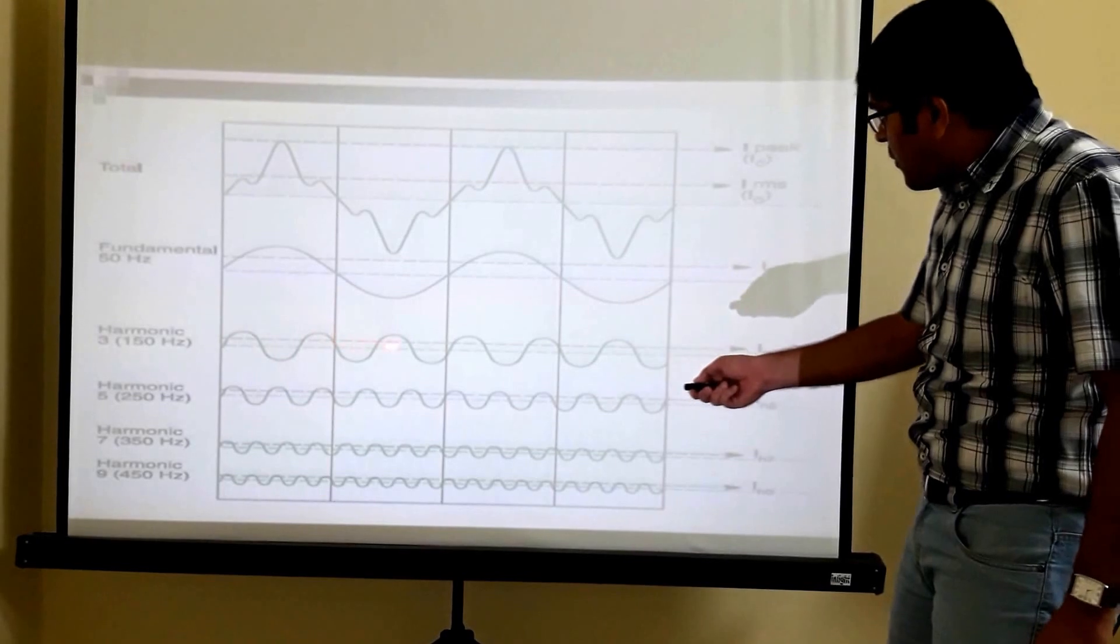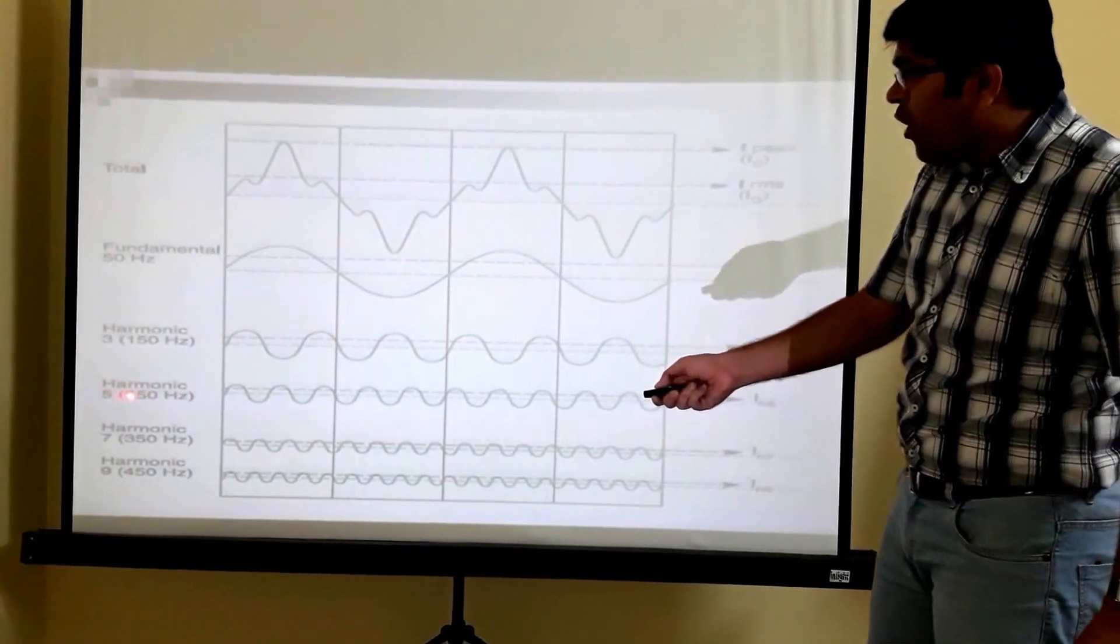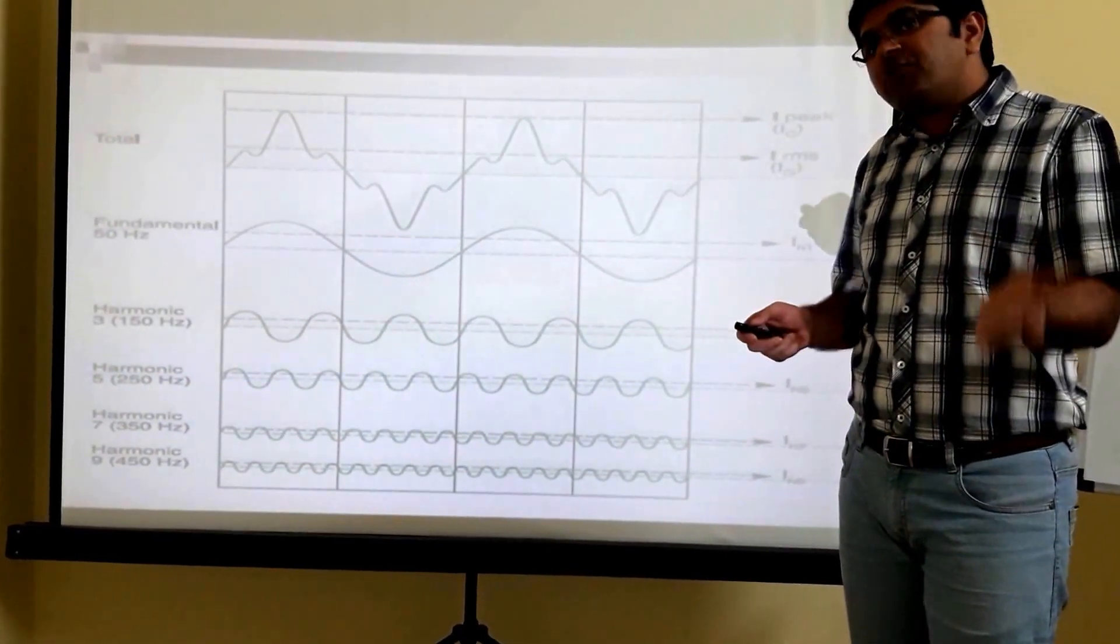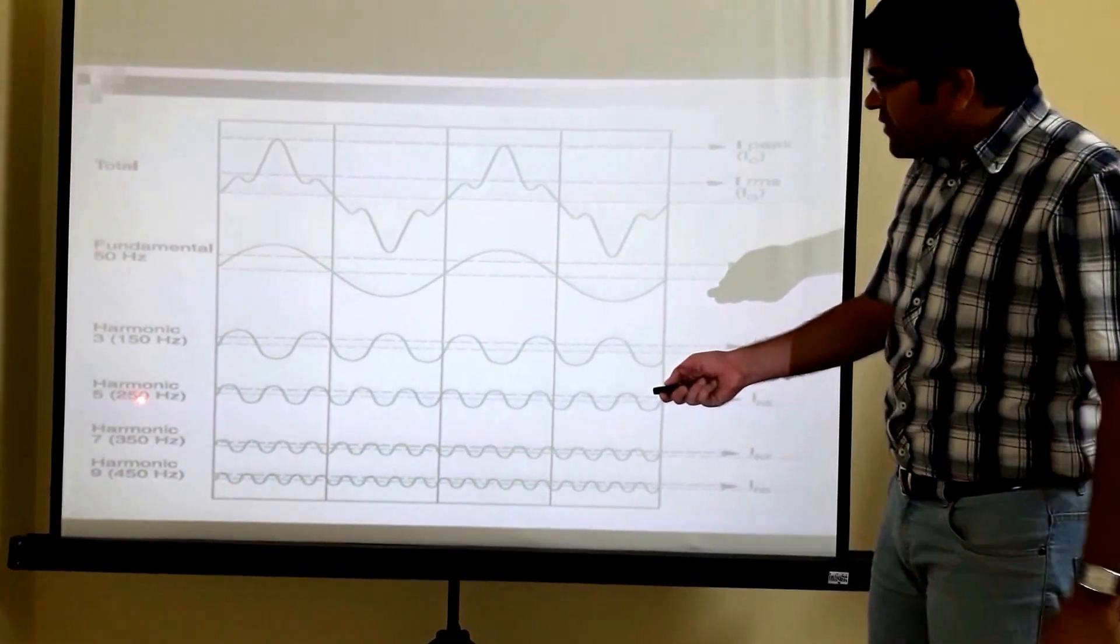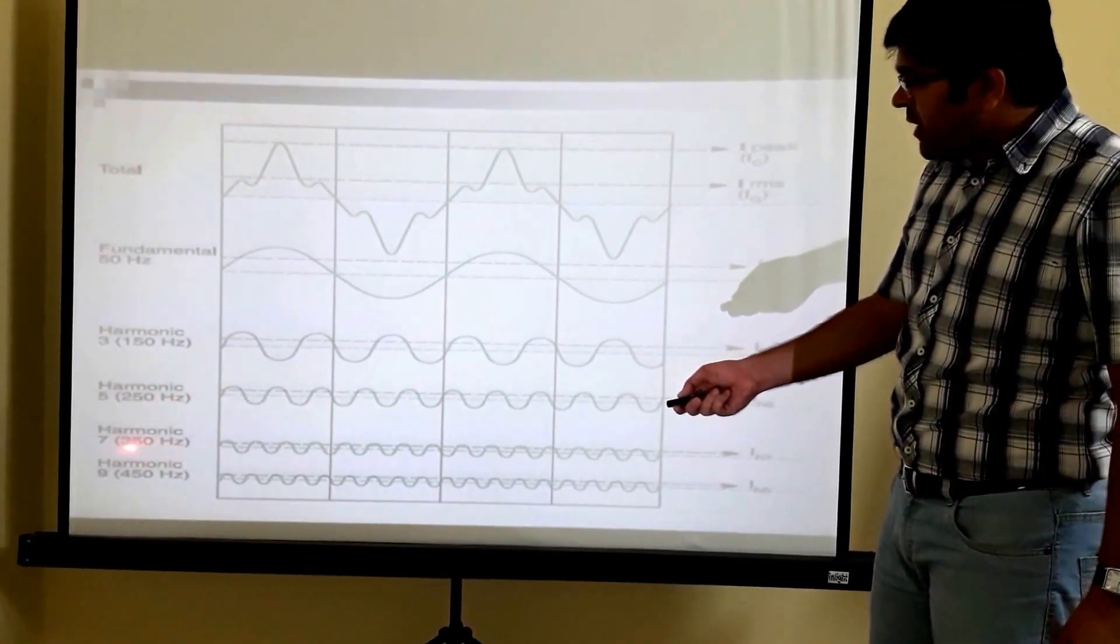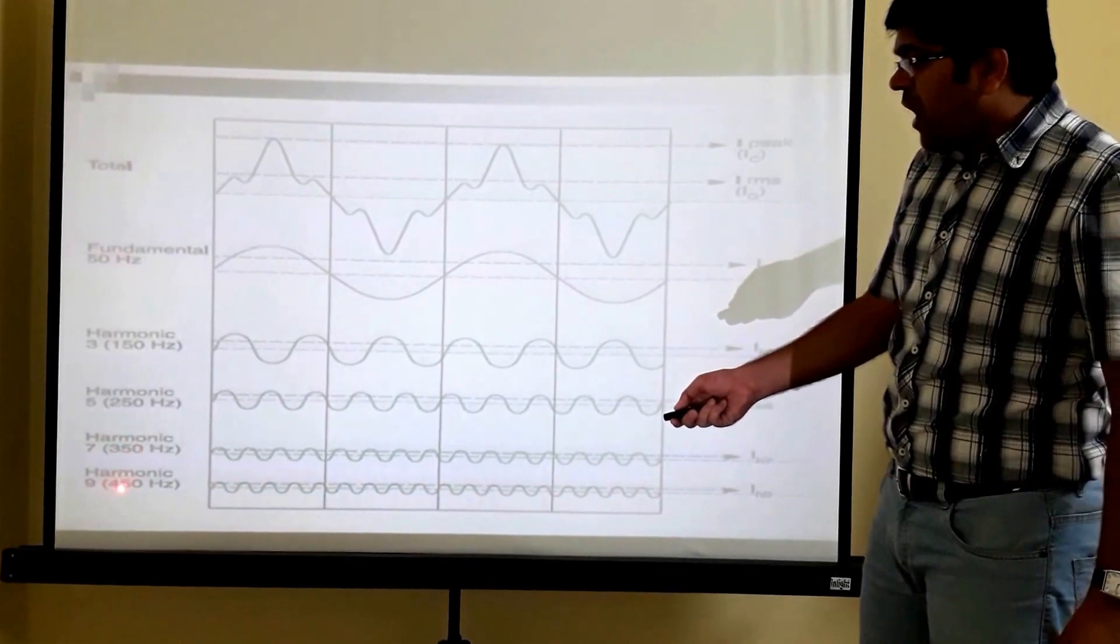Harmonic order 5, 5 is an integer, multiples of fundamental frequency, it makes 250 Hz. Similarly for harmonic 7, for harmonic 9.